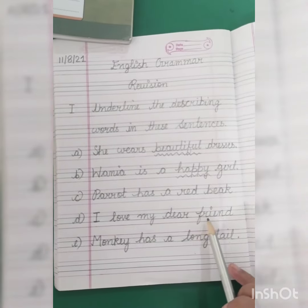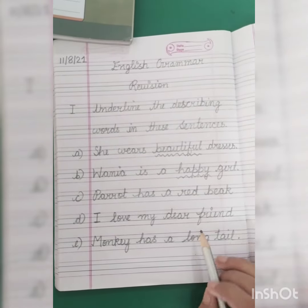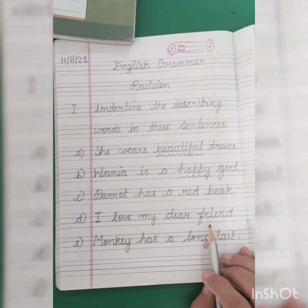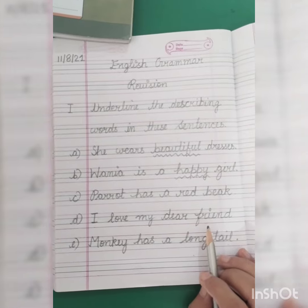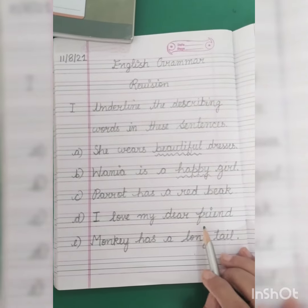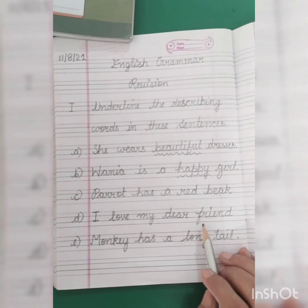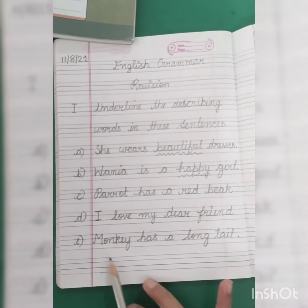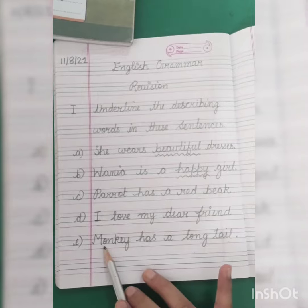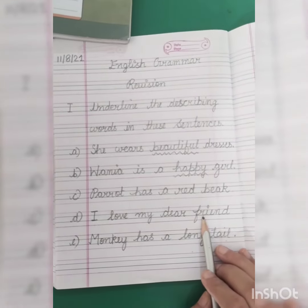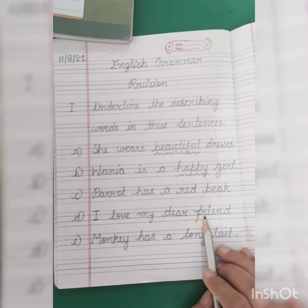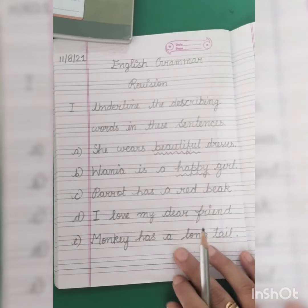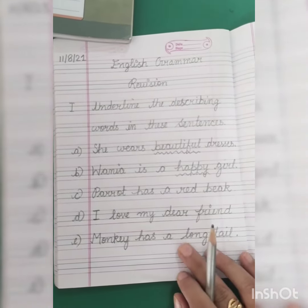Next: I love my dear friend. Mein pyaar karta hoon apne doost se. So 'friend' is a naming word here. Aapko pahchanna hai ki describing word kya hai is mein.